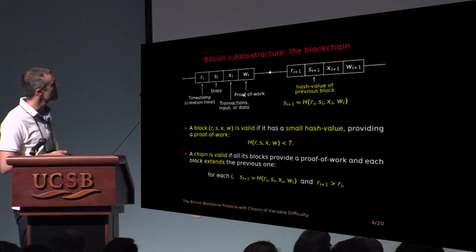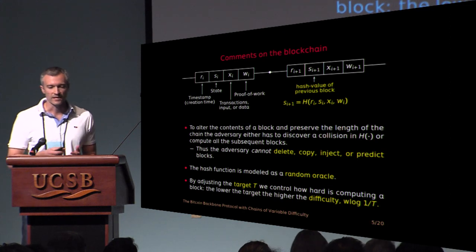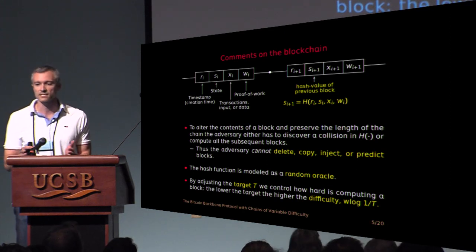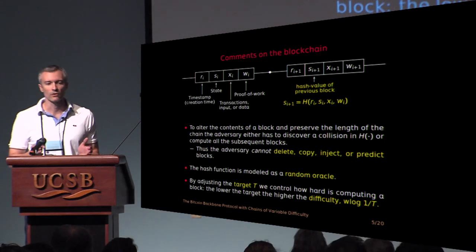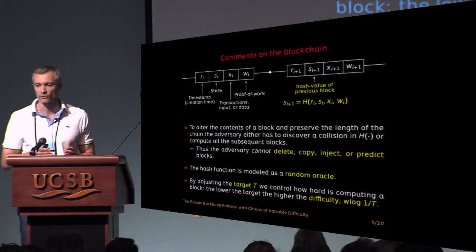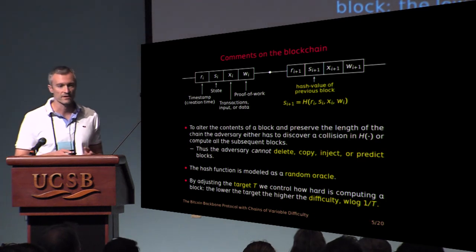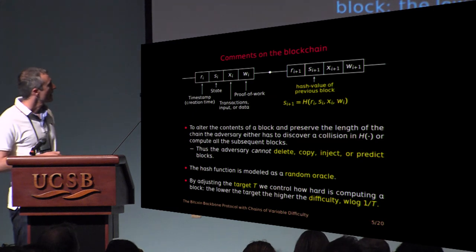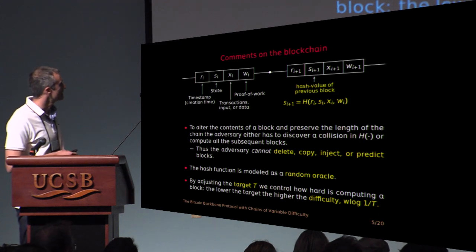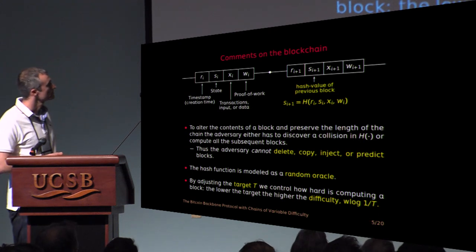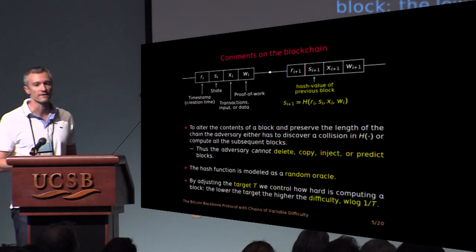So both of these properties make the blockchain tamper resistant. What we should keep from these properties is that the adversary cannot really manipulate existing blockchains. To change the data on some blocks, he should change all subsequent blocks, and so it takes a lot of work, or discover a collision on the hash function. We model the hash function as a random oracle. And also recall that you can adjust the hardness of the puzzle by adjusting the target t. Without loss of generality, we're going to think of the inverse of the target as the difficulty of producing a block.